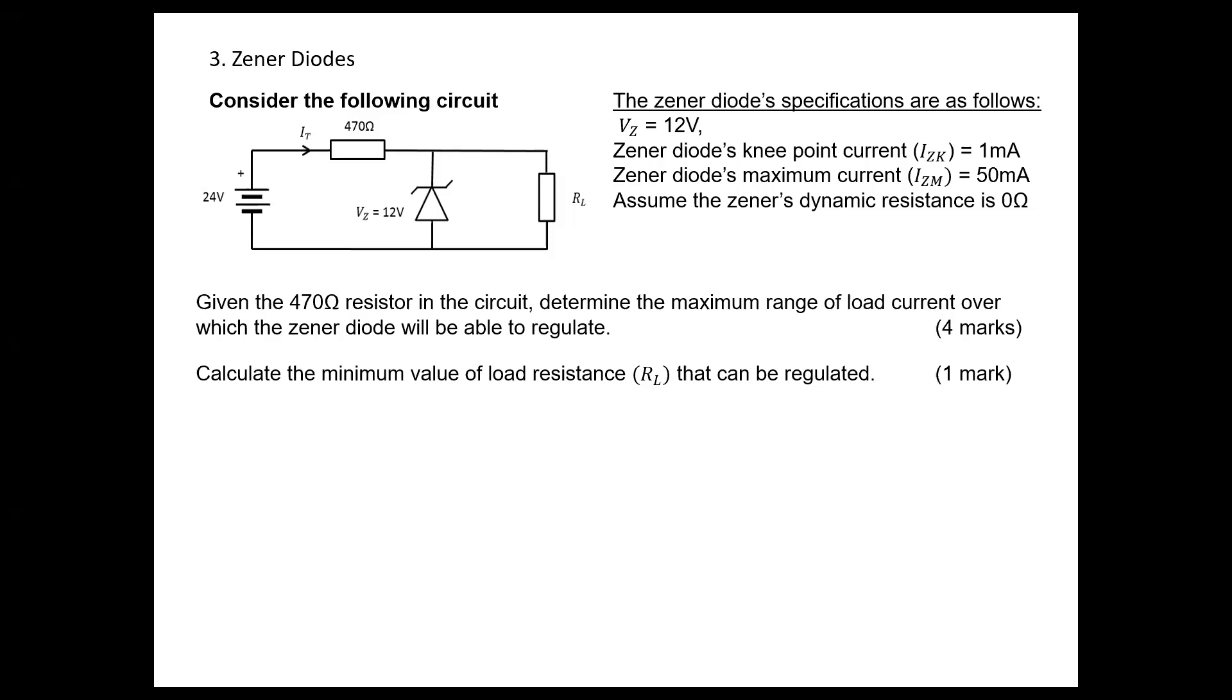You can see for the given Zener diode, the Zener voltage VZ is 12 volts. The current limiting resistor is 470 ohms, and the input power supply is 24 volts.